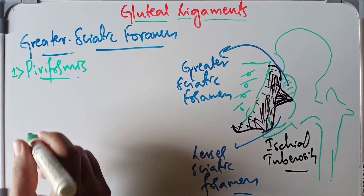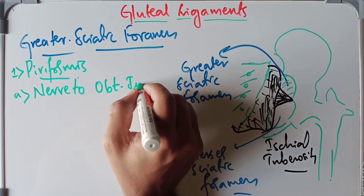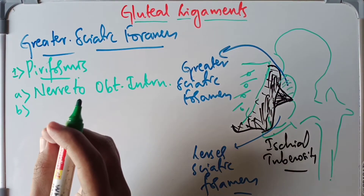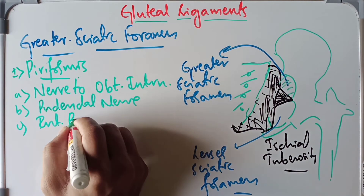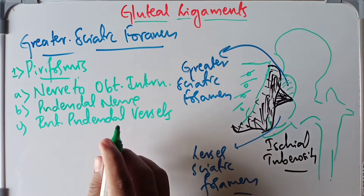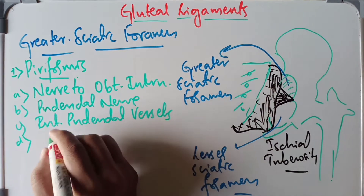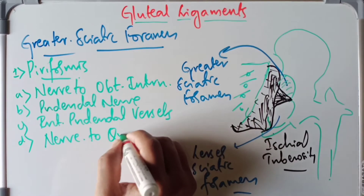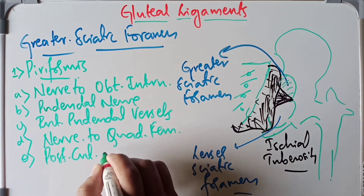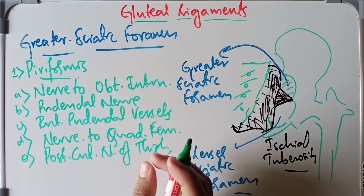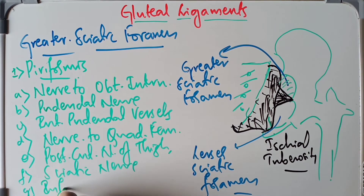The structures passing below the piriformis are: the nerve to obturator internus, the internal pudendal vessels, the pudendal nerve, the nerve to quadratus femoris, the posterior cutaneous nerve of the thigh, the sciatic nerve, the inferior gluteal nerve, and the inferior gluteal vessels.